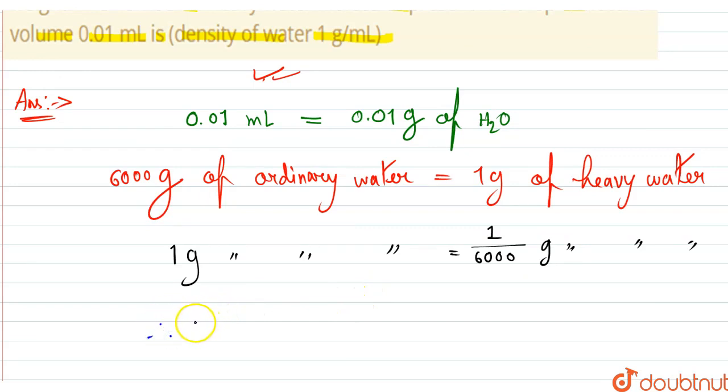Therefore our given weight is 0.01 gram of ordinary water, so which will correspond to 1 into 10 to the power minus 5 divided by 6 gram of heavy water.